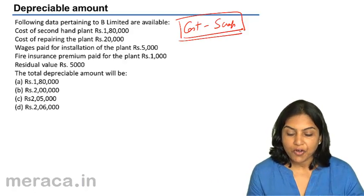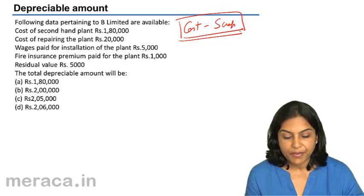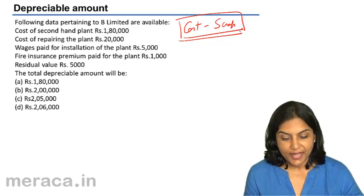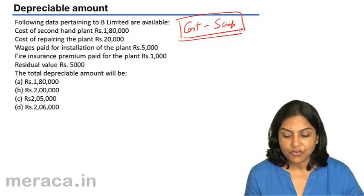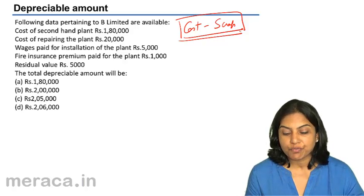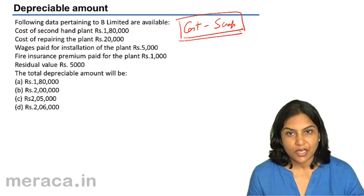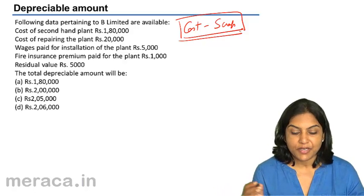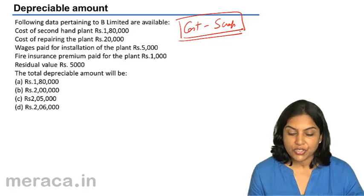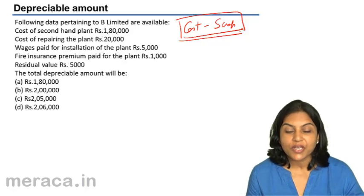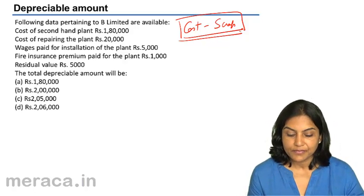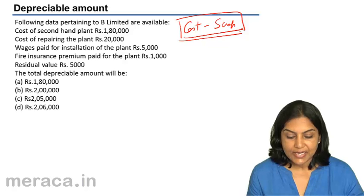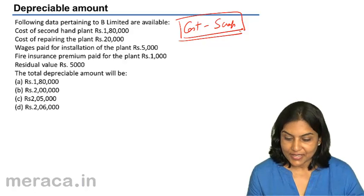Following data pertaining to B Limited is available: cost of the secondhand plant 1,80,000; cost of repairing 20,000; wages paid for installation of the plant 5,000; fire insurance premium paid for the plant 1,000. This exercise is exactly the same as before. In addition, we have information that the residual value is 5,000. The total depreciable amount would therefore be: A: 1,80,000; B: 2,00,000; C: 2,05,000; or D: 2,06,000?